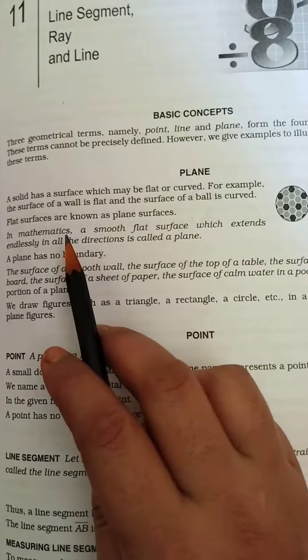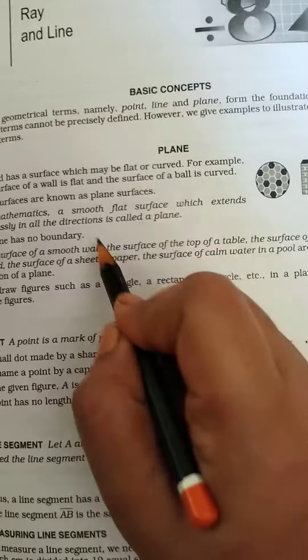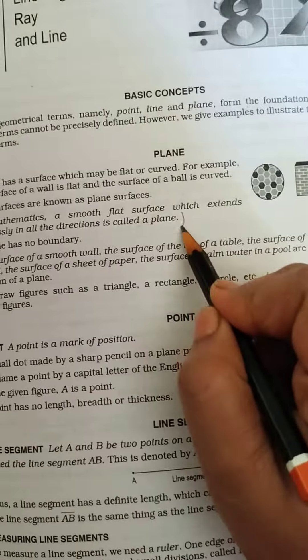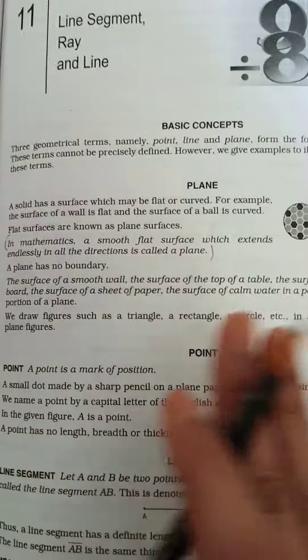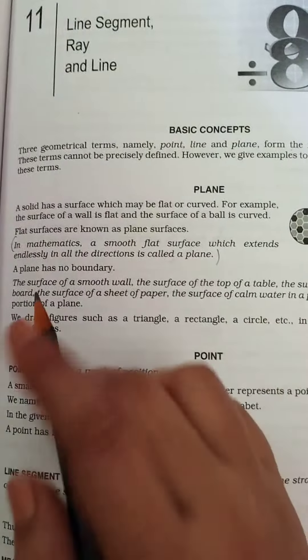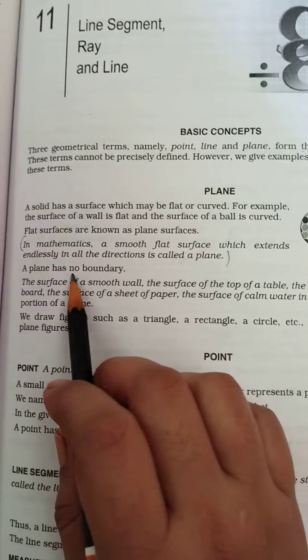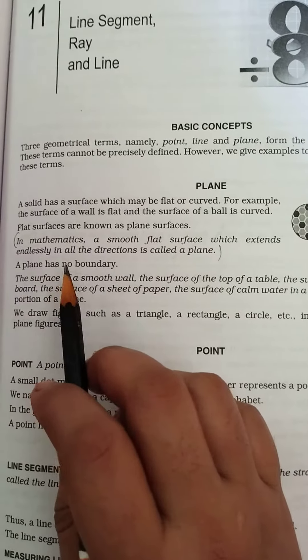Flat surfaces are known as plane surfaces. In mathematics, a smooth flat surface which extends endlessly in all directions is called a plane. This is the definition of plane: a smooth flat surface which extends endlessly in all directions.